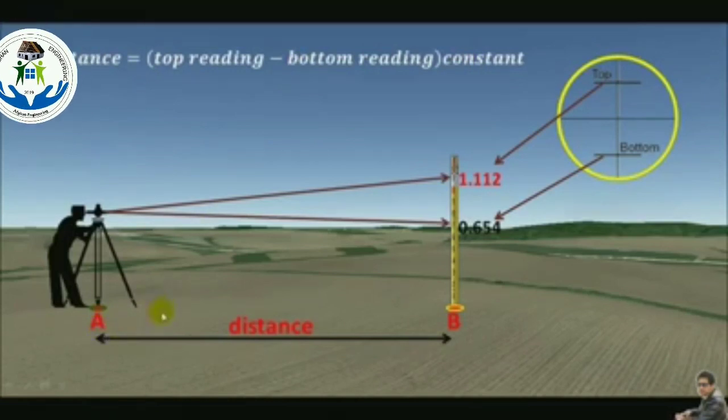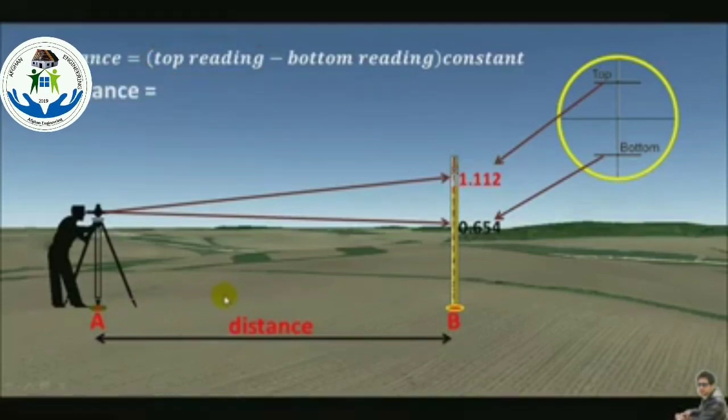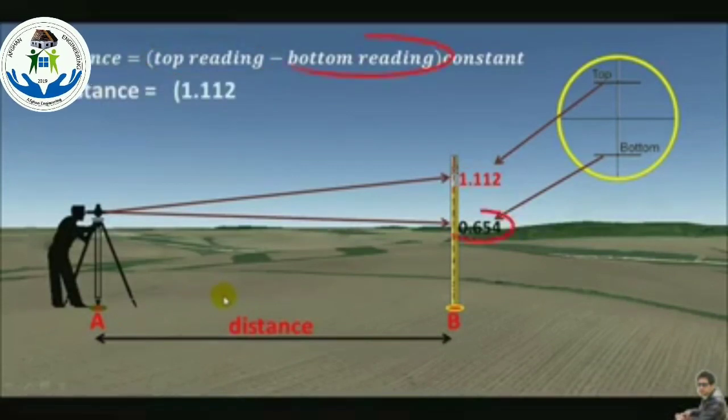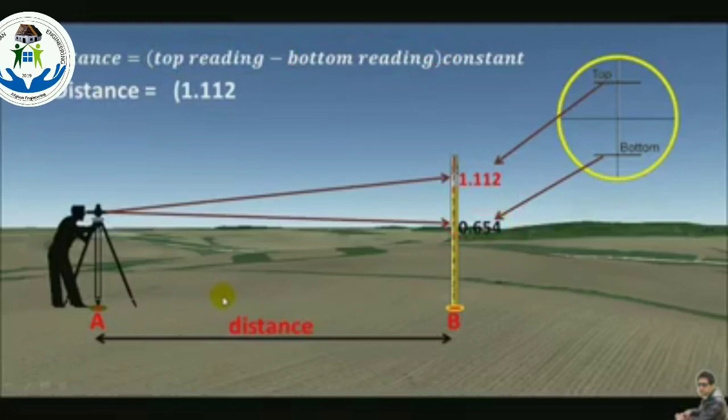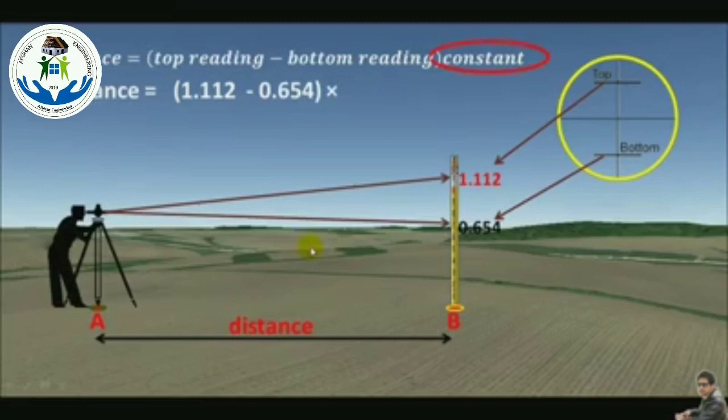Let's do the calculation. The distance equals the top reading 1.112 minus the bottom reading 0.654 meter times the constant. The constant may be different for every type of instrument, but mostly we use 100.